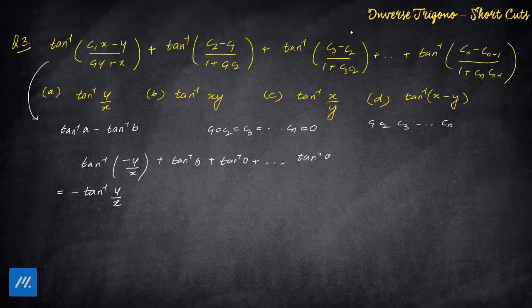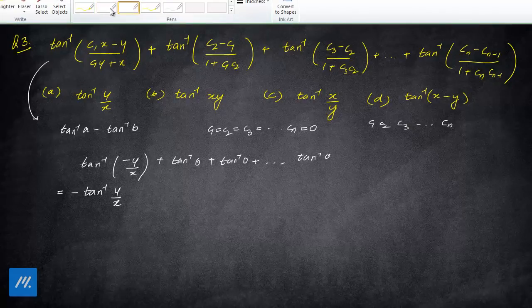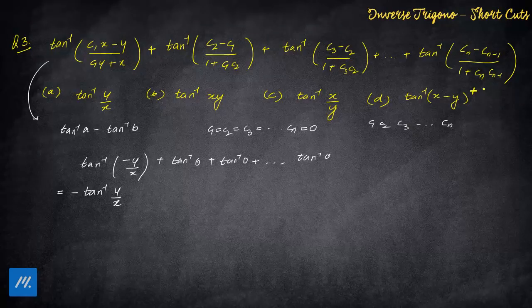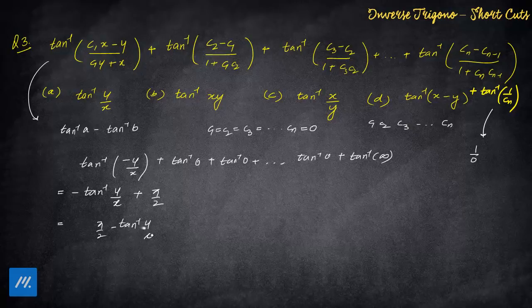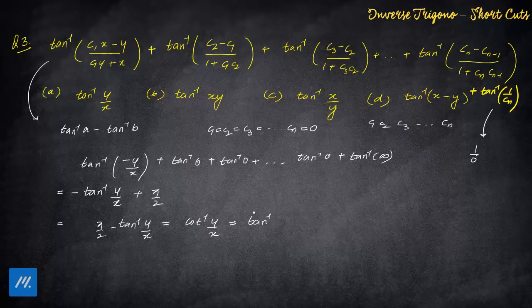The answer is clearly −tan inverse(y/x). But there seems to be a typo in the question — the last term should have been tan inverse(1/cn). With cn = 0, the last term becomes tan inverse(1/0) = tan inverse(∞) = π/2. So the full result is π/2 − tan inverse(y/x) = cot inverse(y/x).